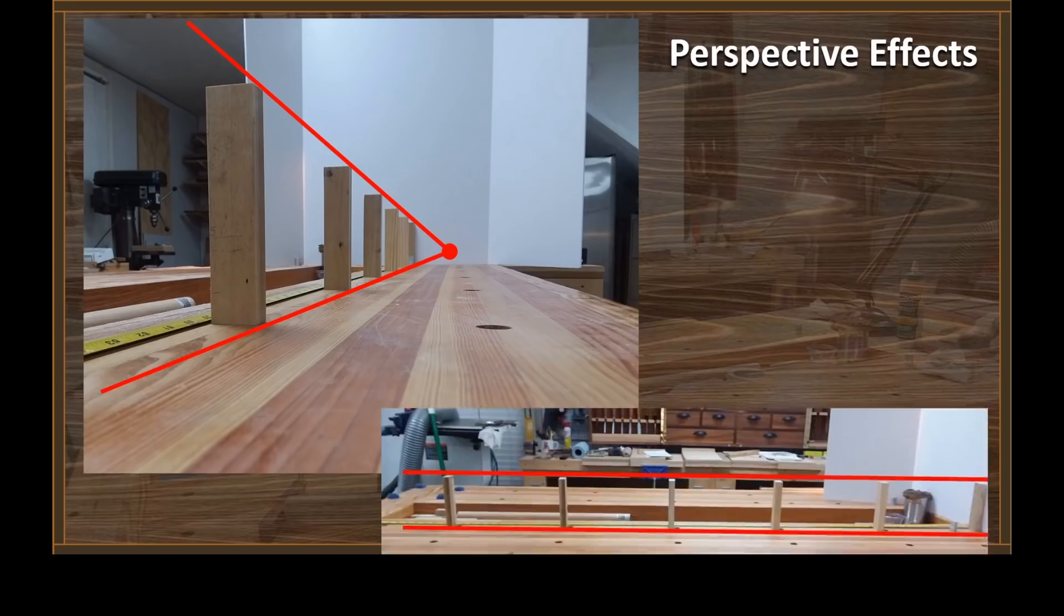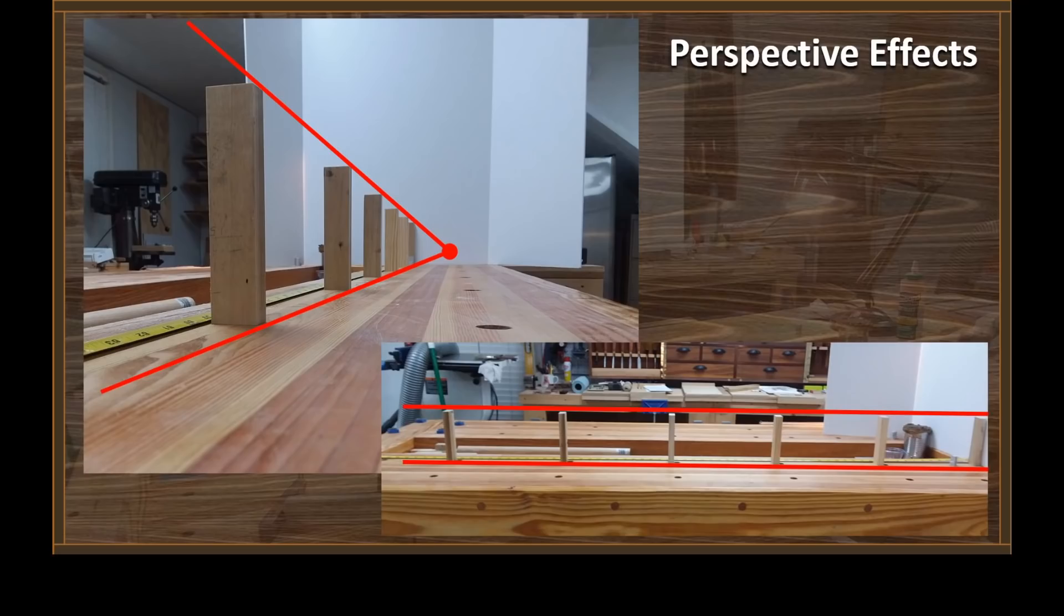Now if we look at that from the side view, it looks like this. And now you can see that the blocks are all exactly the same size. If I wanted to represent these two views on a drawing, they would have to look just like what we see here.